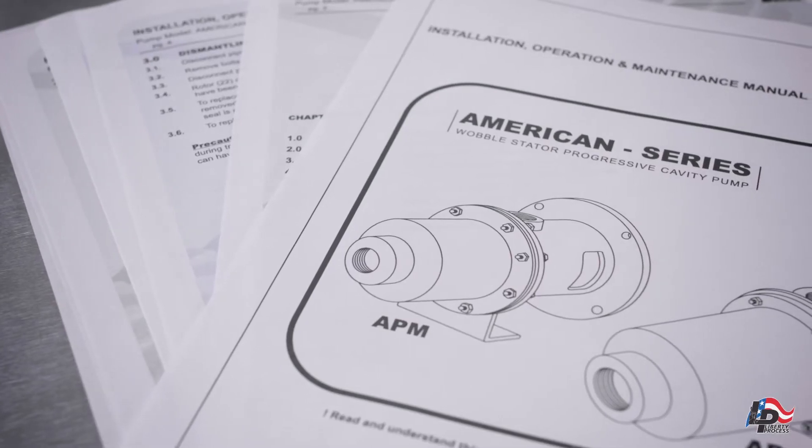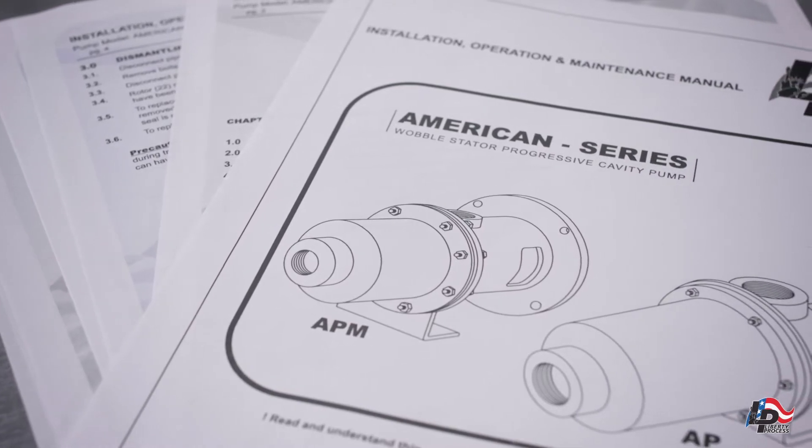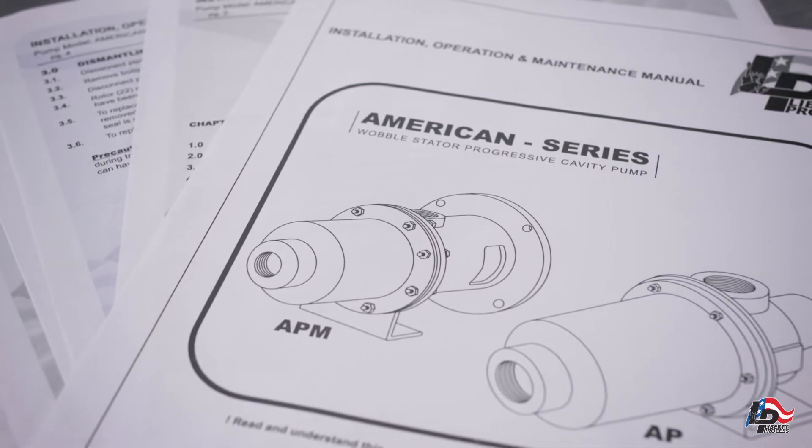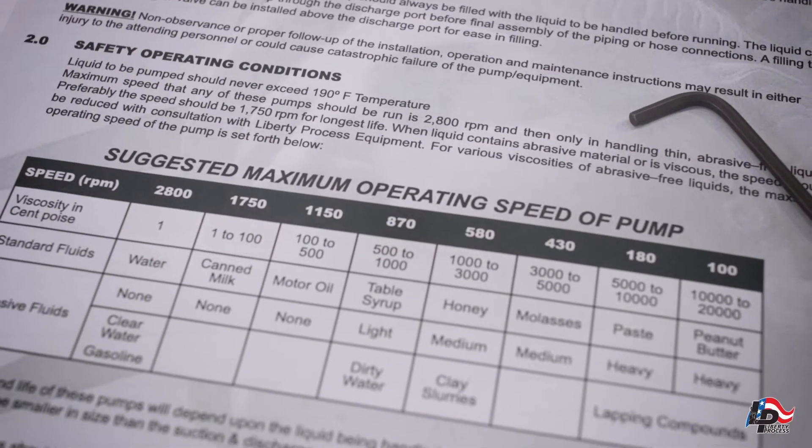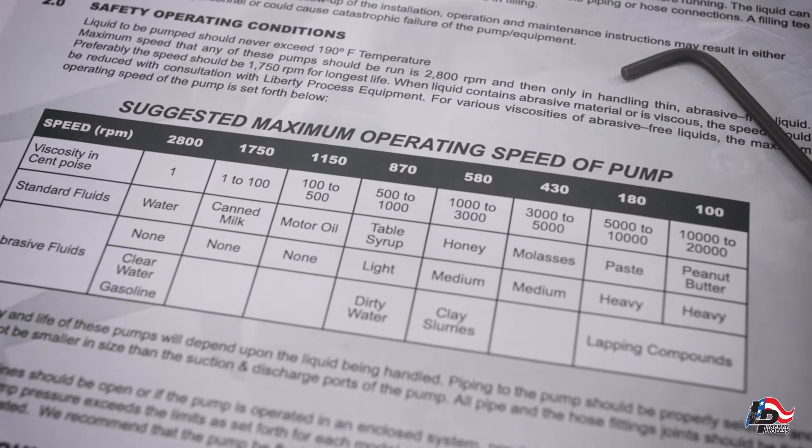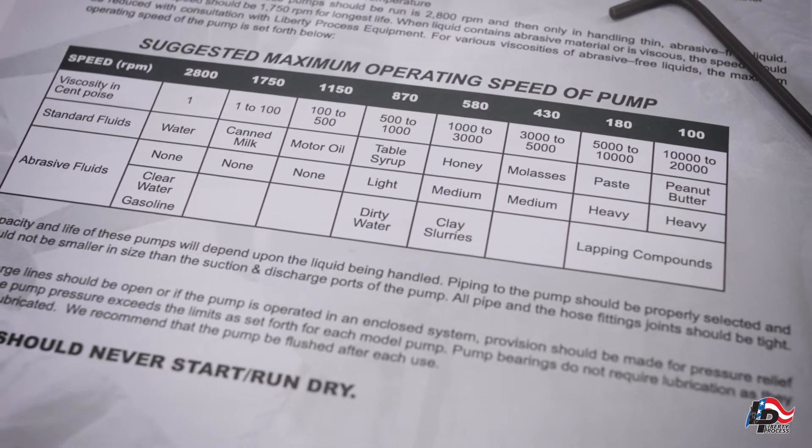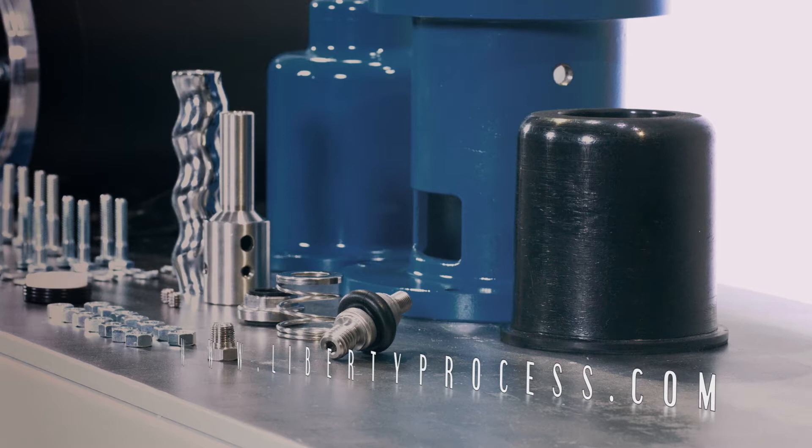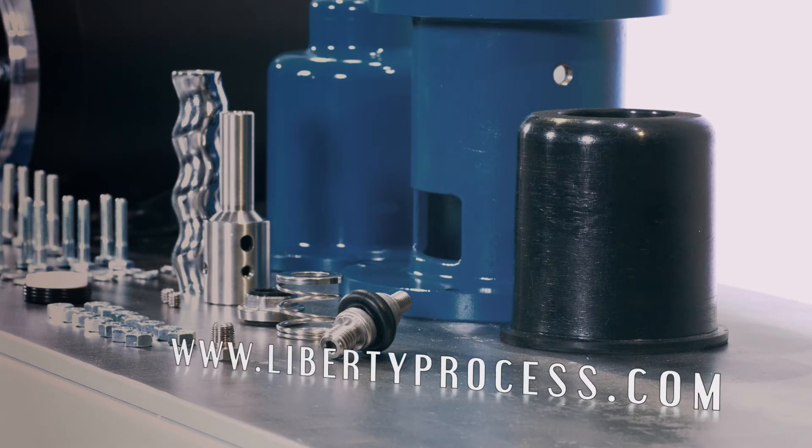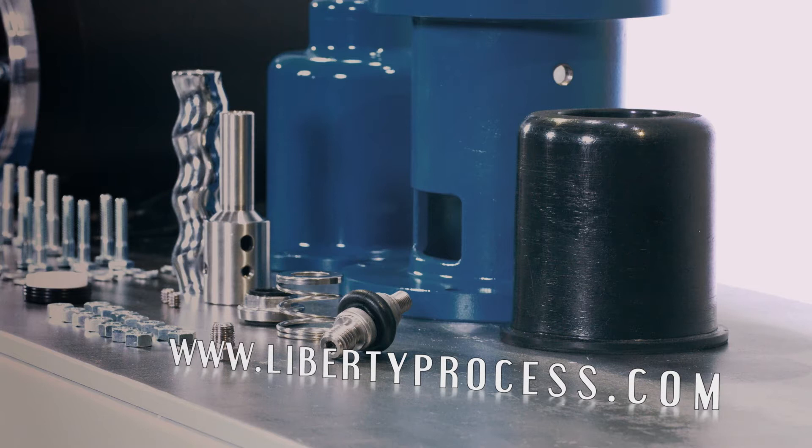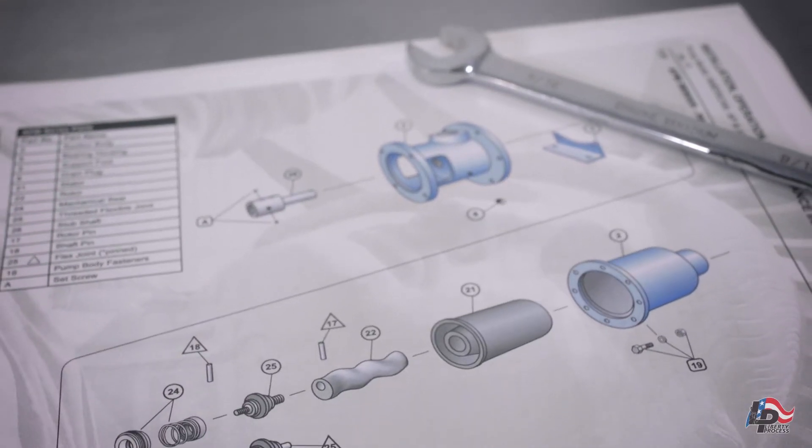Here we will fully demonstrate the complete disassembly of the APM 22 Progressing Cavity Pump. While repairing, disassembling, or installing the pump, we recommend using the Operations, Maintenance, and Installations manual for the Liberty AP and APM series pumps and reviewing them before starting any repairs. These are available for view or downloadable at www.LibertyProcess.com. These manuals contain the full information on how to properly assemble and disassemble and how to safely operate your Liberty Progressive Cavity APM series Wobble Stator Pump.